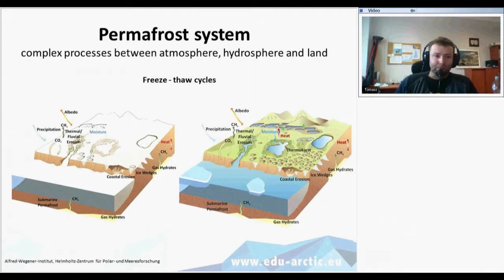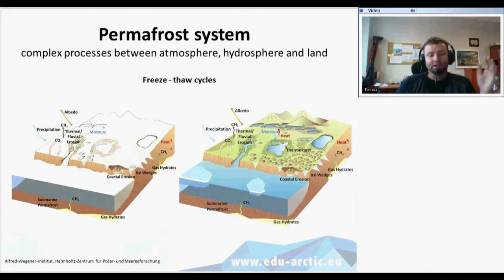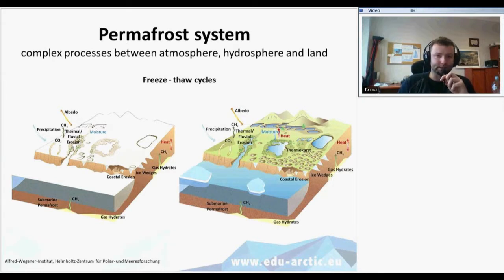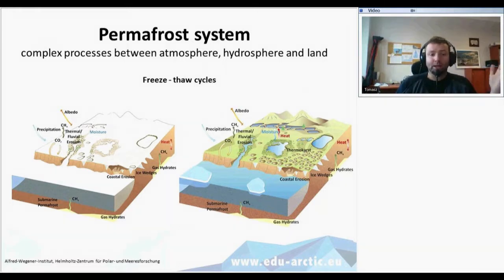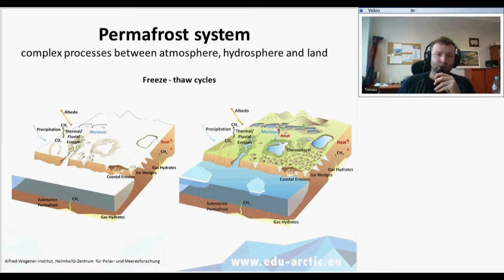Permafrost systems are pretty complex. There are different processes between atmosphere, hydrosphere, and land. There are connections between thermal and fluvial erosion, and also the influence of seawater for coastal erosion, and there are different landforms connected to these areas with occurrence of permafrost. There are different freeze and thaw cycles — during winter the ground freezes, and during summer when solar radiation comes into these areas at high latitudes, we see different processes of freezing and thawing. All these processes are connected with the landforms that will be presented.